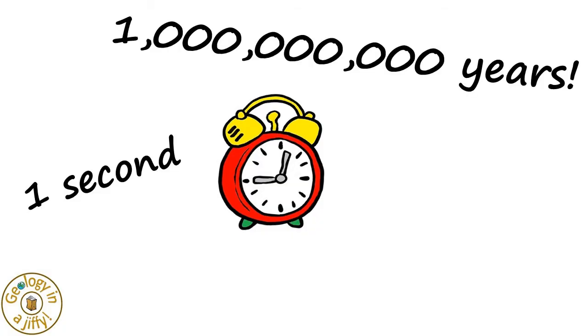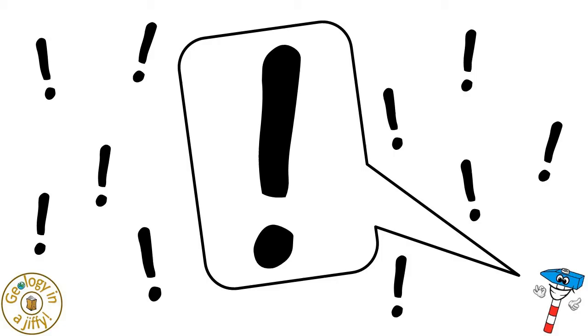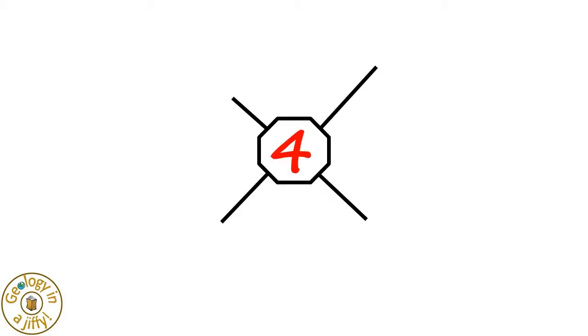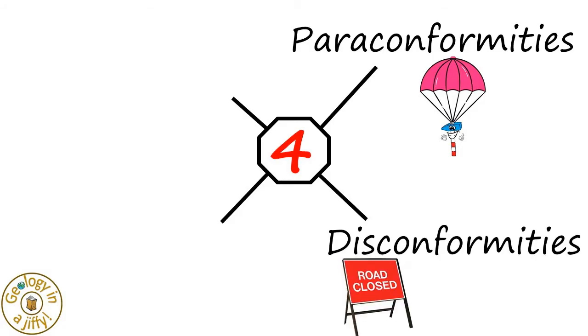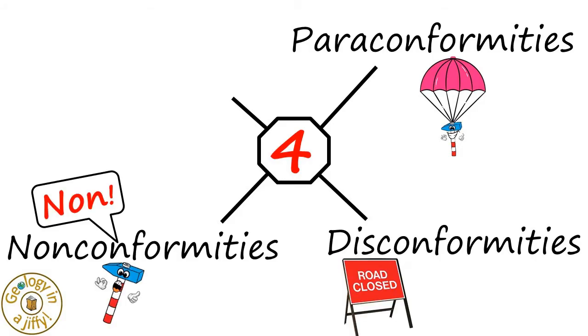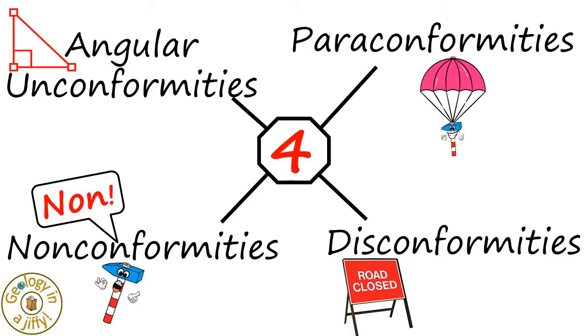An unconformity may represent a break of any length of time, from just a second to billions of years. That's amazing! There are four types of unconformities: Paraconformities, Disconformities, Nonconformities, and Angular Unconformities.